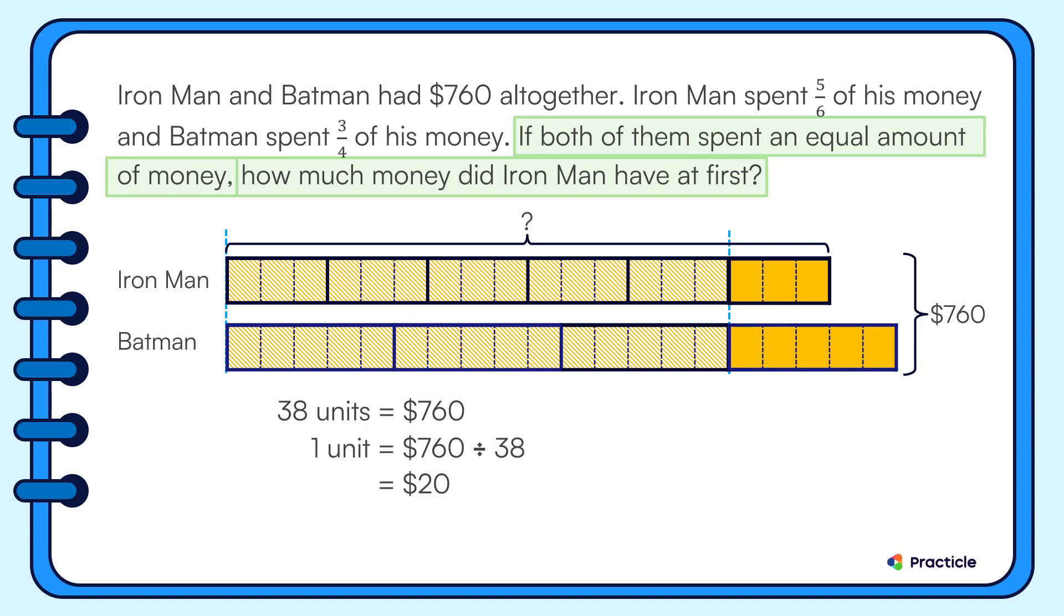Since we've found that one smaller unit represents twenty dollars, it's easy to find the value of eighteen smaller units. When we multiply twenty dollars by eighteen, we get three hundred and sixty dollars. And that's the amount of money that Iron Man had at first.